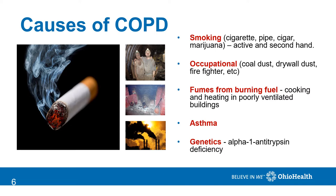Asthma increases your risk. And genetics — alpha-1 antitrypsin deficiency is a specific type of genetic defect that leads to early COPD.